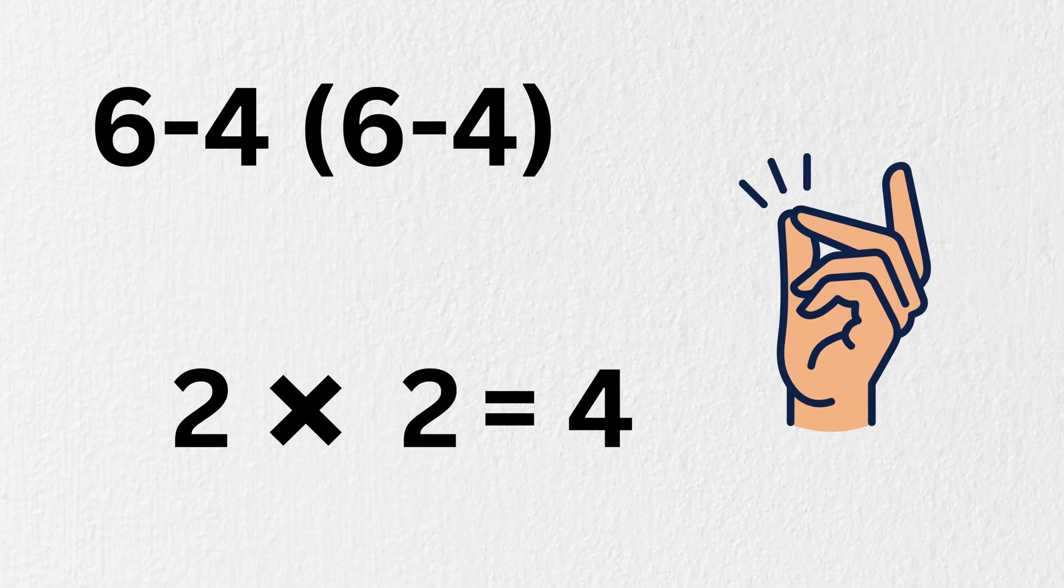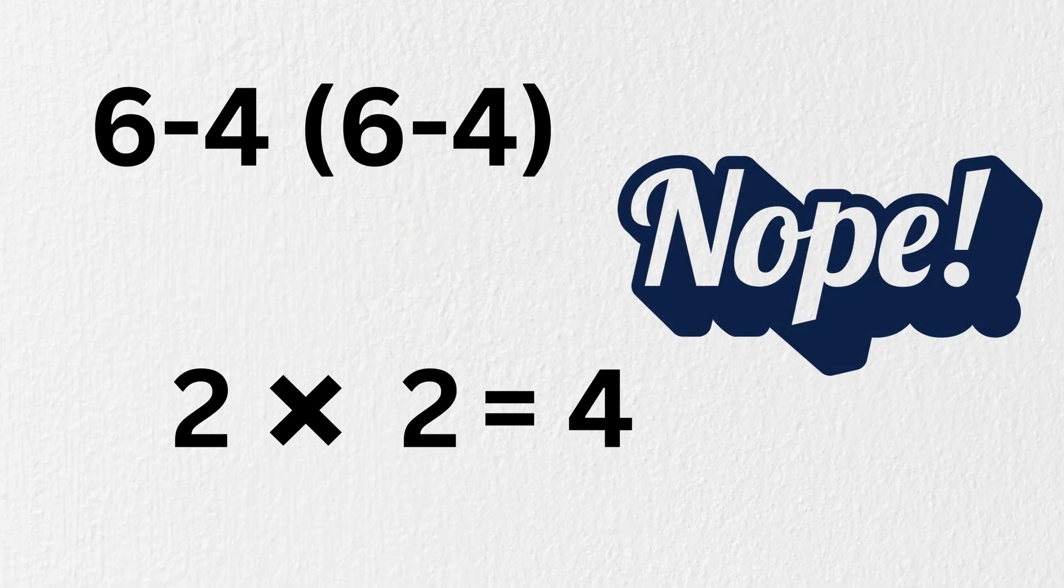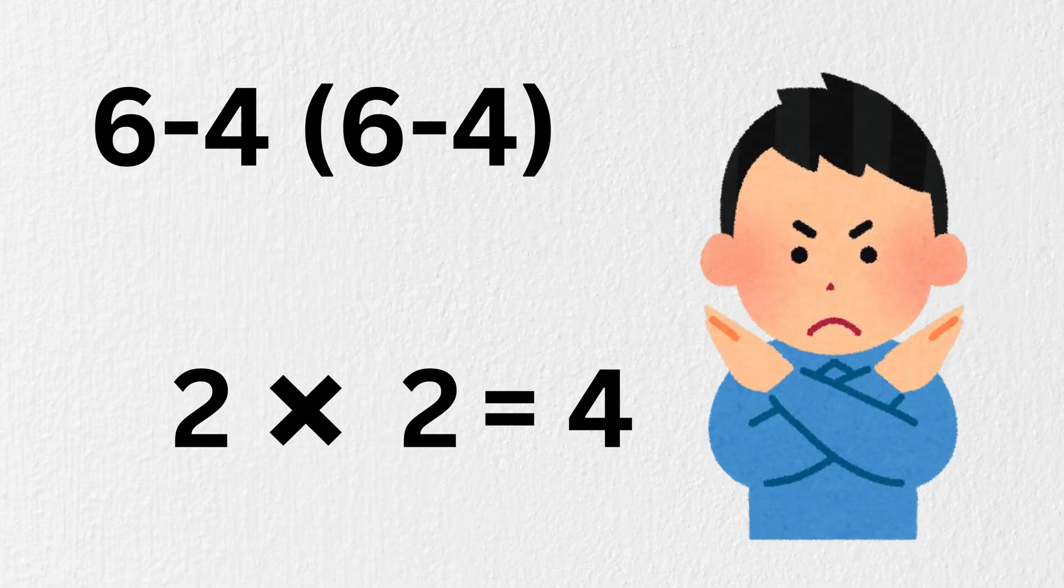Now, some people will quickly say 6 minus 4 is 2, and again 6 minus 4 is 2. So 2 times 2 equals 4. Easy. But nope, that's the trap. The real answer is not 4. It's totally different. Why?